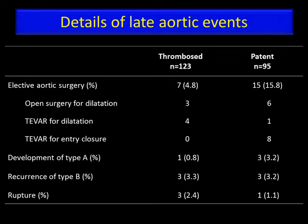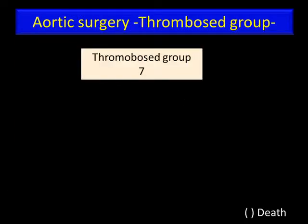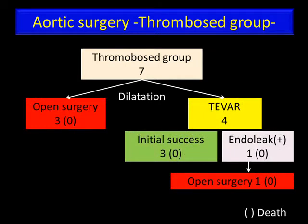Moving on to the late aortic events. In the thrombosed group, seven patients underwent elective aortic surgery during follow-up, and in the patent group, 15 patients underwent elective aortic surgery. All seven in the thrombosed group underwent surgery because of aortic dilatation: three underwent open surgery and four underwent TEVAR. An endoleak developed in one patient, who subsequently underwent open surgery for aortic expansion. There was no surgery-related death.